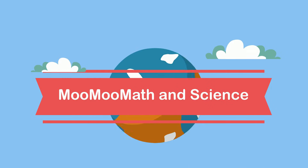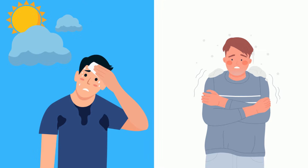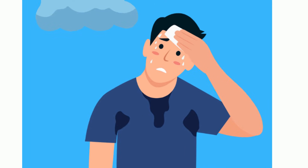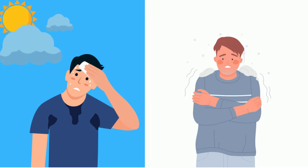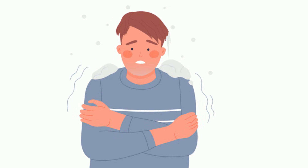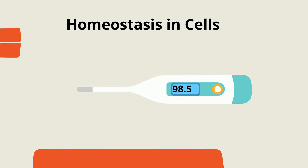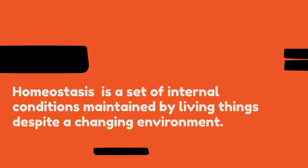Welcome to MooMooMath and Science and how cells maintain homeostasis. On a hot summer day, we all begin to sweat. On a very cold day, we will shiver. This happens because your body is trying to maintain an internal temperature of around 98 degrees Fahrenheit. This is one example of homeostasis — a set of internal conditions maintained by living things despite a changing environment.